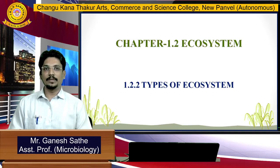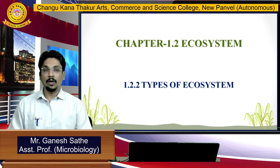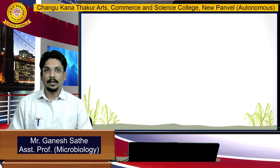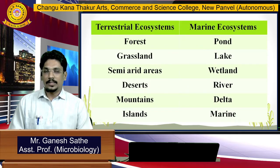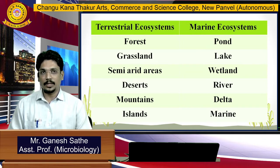In the previous lecture, I discussed the definition of an ecosystem and its components. Now I will explain the types of ecosystem in detail. As I already told you, ecosystems are classified into two main types: terrestrial ecosystem and marine ecosystem.